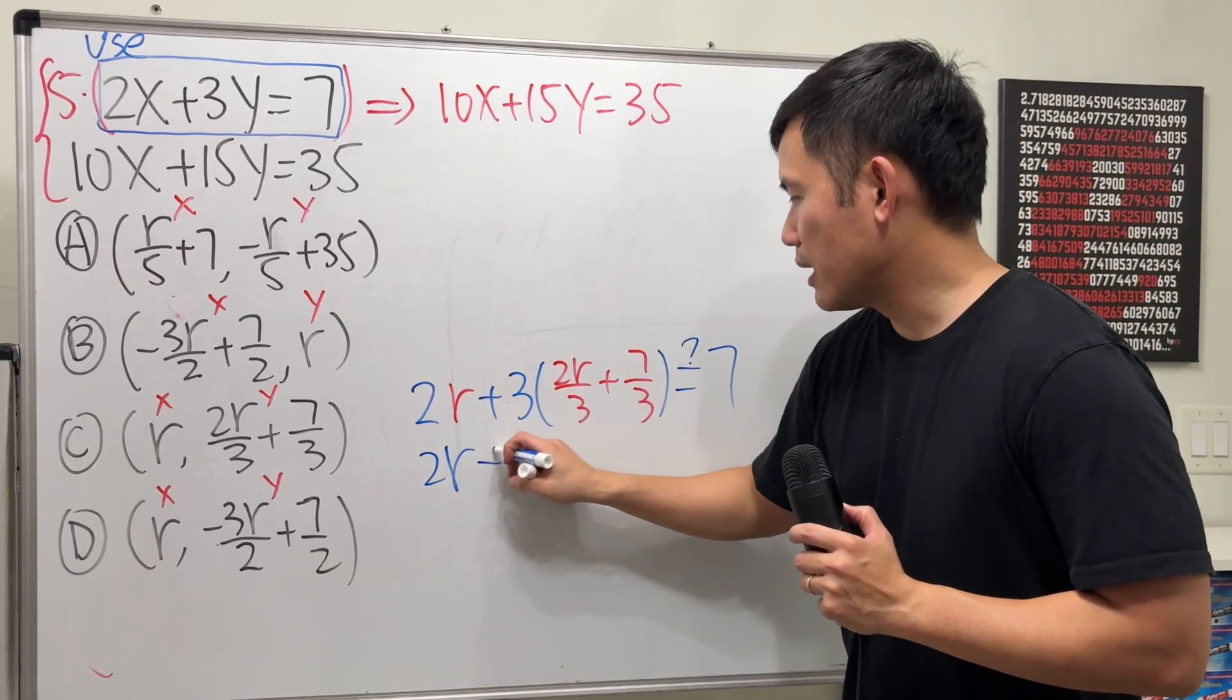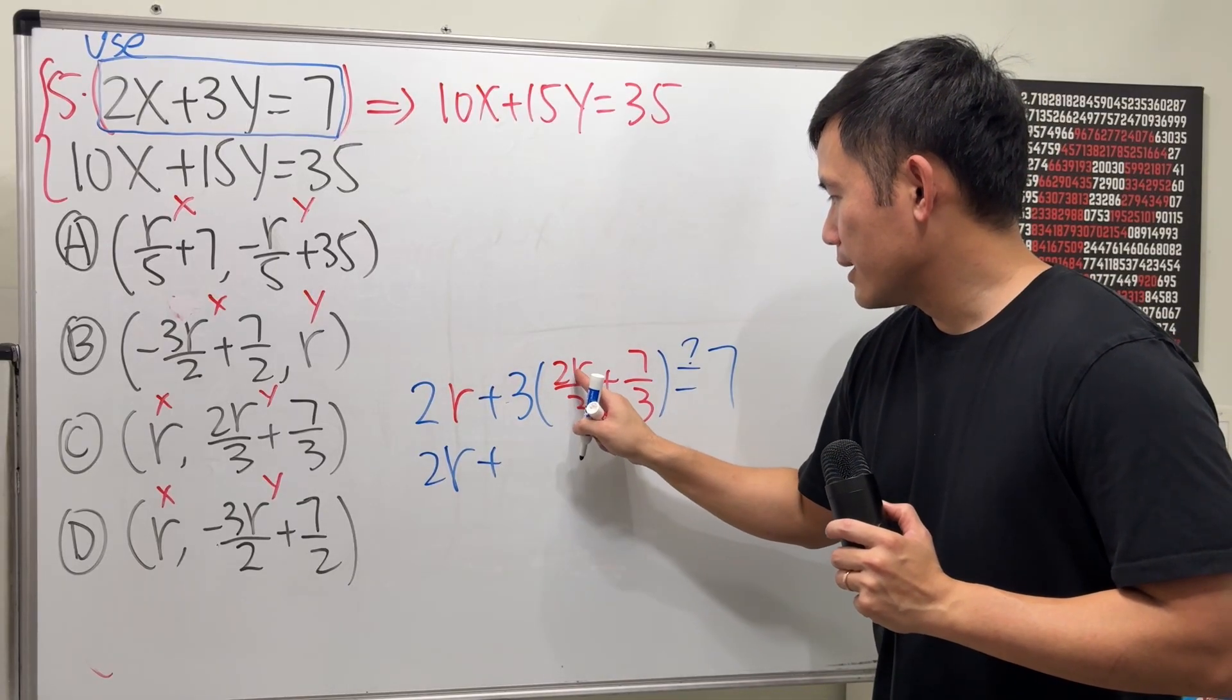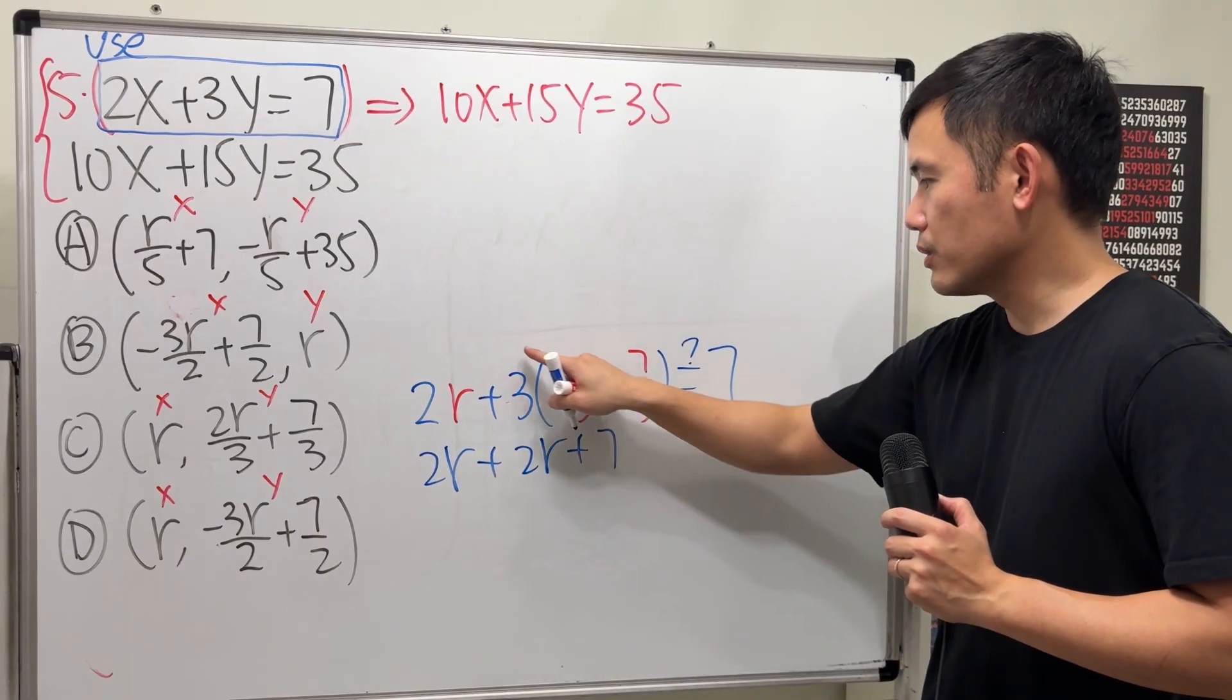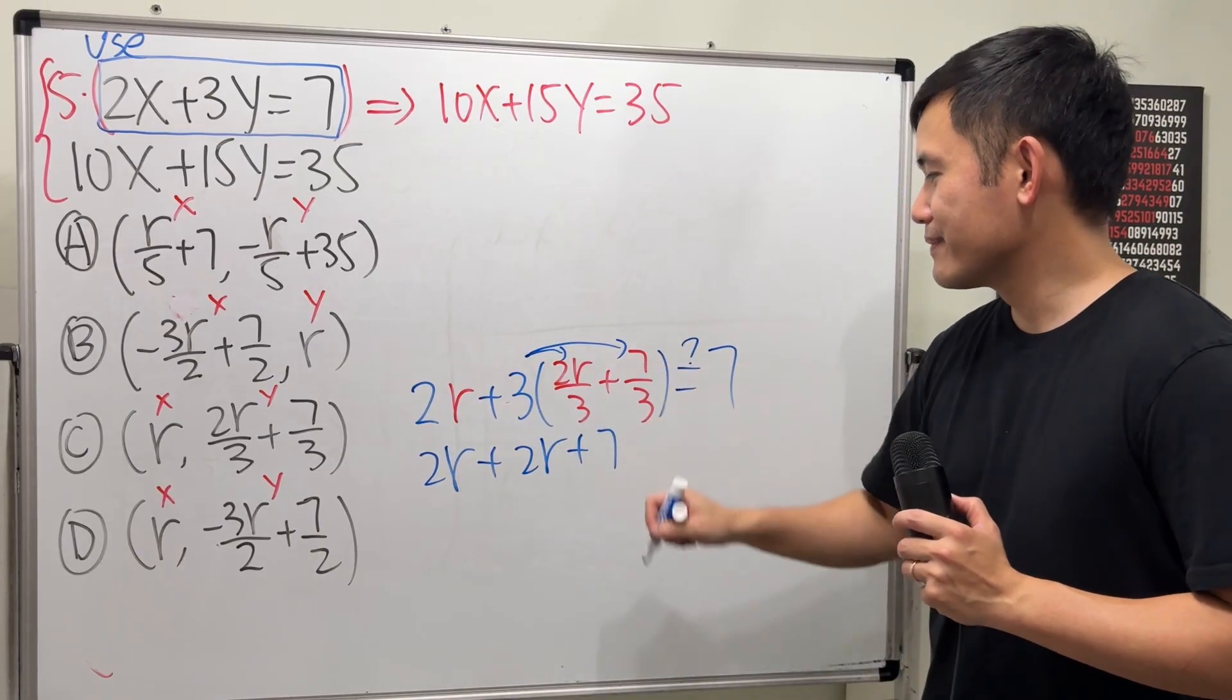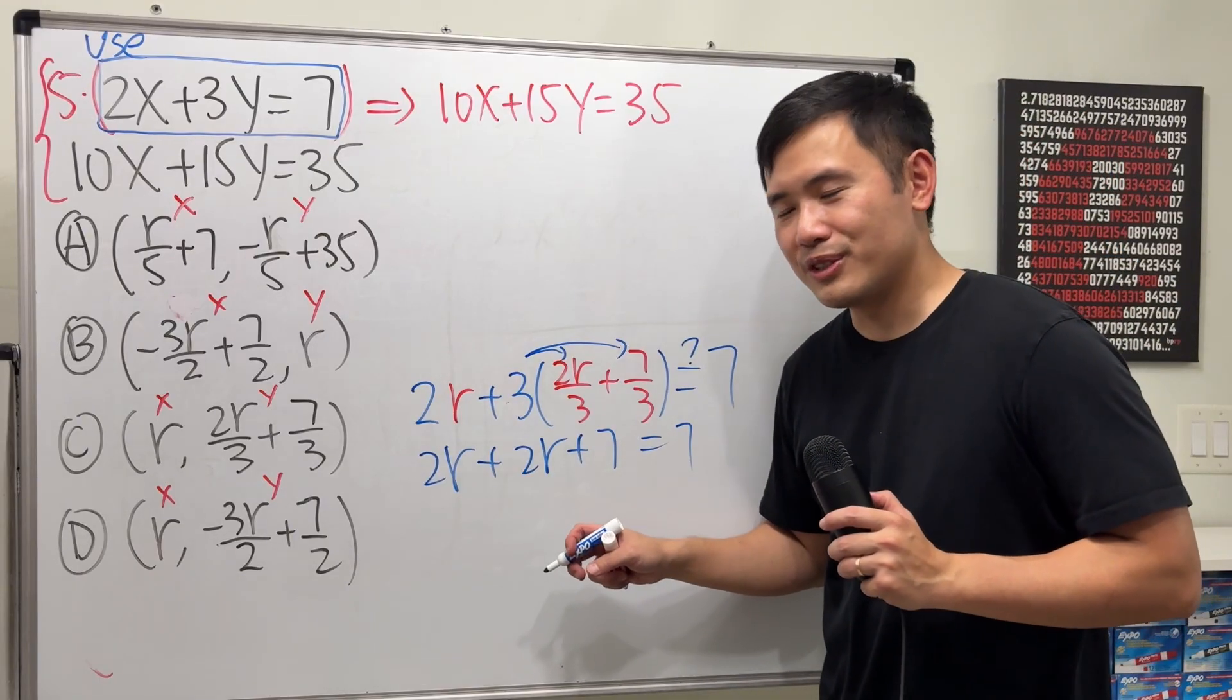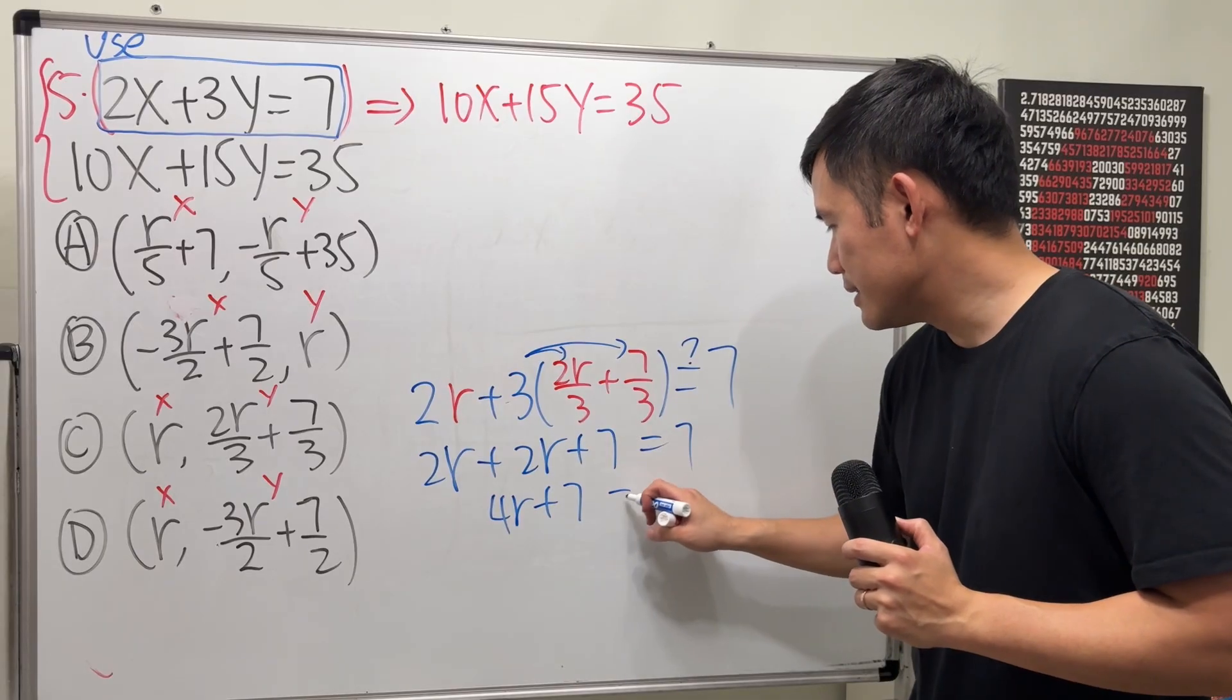This is 2r plus, well, they can solve very nicely, huh? So just get 2r plus 7. Again, the 3 is canceled when you distribute. Do we get 7? A little bit too much. This is 4r plus 7. It's equal to 7.